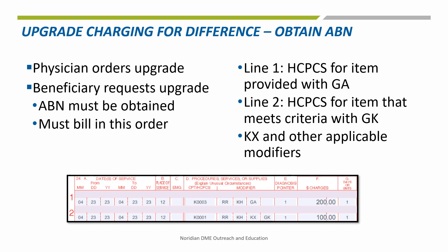The K0003 lightweight wheelchair was provided — either the physician ordered it or the beneficiary requested it — and the beneficiary is paying for the difference. The K0001 standard wheelchair is the chair the beneficiary meets criteria for and is the chair that will be eligible for reimbursement. The amount in line 1 must be greater than the amount in line 2 in order for the claim to process correctly.